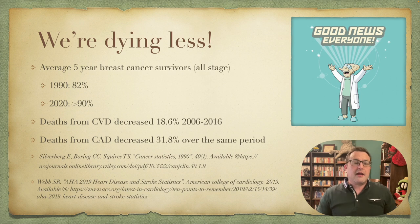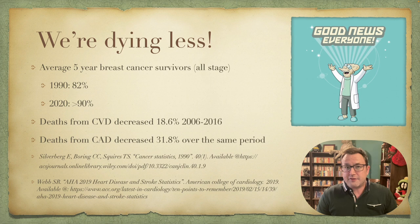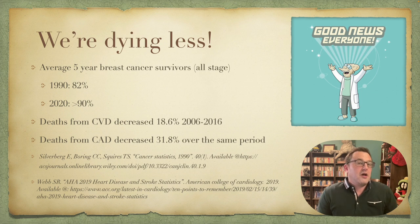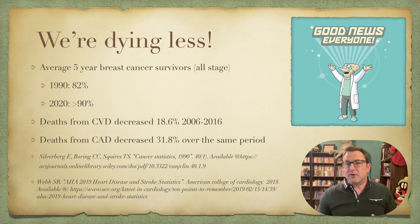We're dying less. The average five-year breast cancer survival rate in 1990 was 82%, and in 2020 — fast forward 30 years — it's over 90%. Deaths from CVD have decreased almost 20% from 2006 to 2016, and deaths from CAD have decreased almost by a third over that same period. Our ability to survive diseases is getting better all the time — that's more related to medical technology than incredible evolution, but still good news.